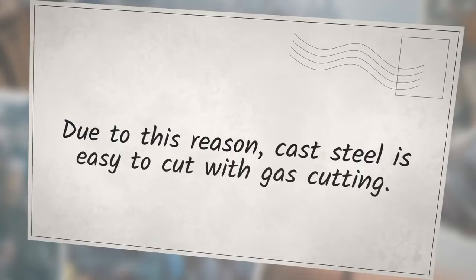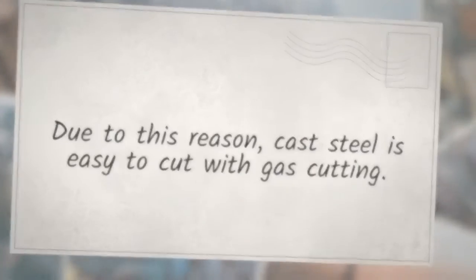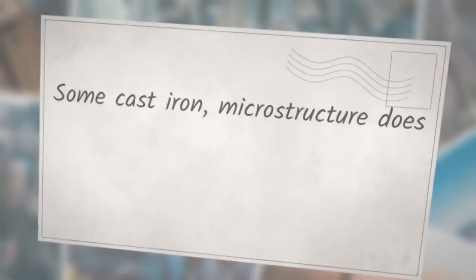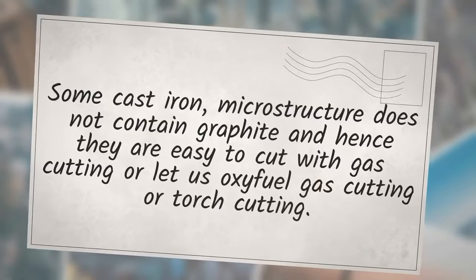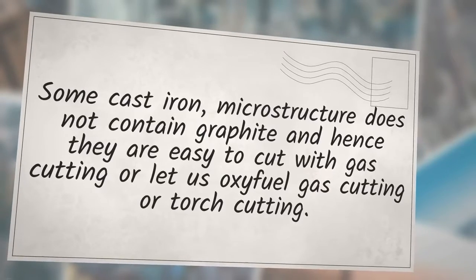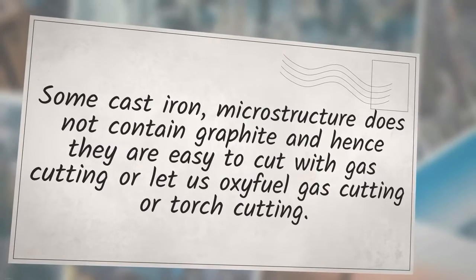Due to this reason, cast steel is easy to cut with gas cutting. Some cast iron microstructure does not contain graphite and hence they are easy to cut with gas cutting or oxyfuel gas cutting or torch cutting.